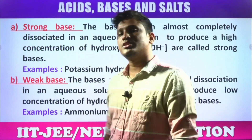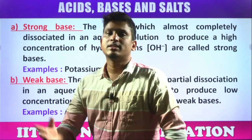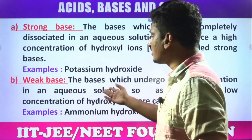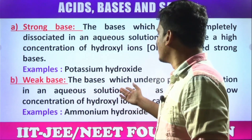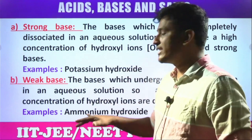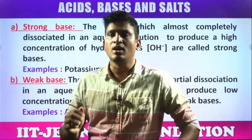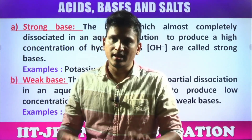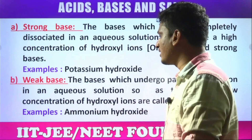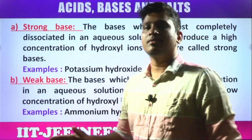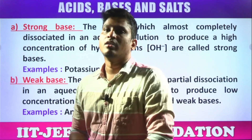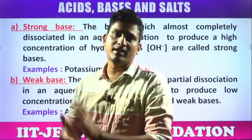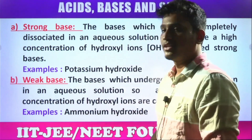Examples of strong bases are potassium hydroxide KOH and sodium hydroxide NaOH. When it comes to weak bases, these are bases which undergo partial dissociation — only a limited number of OH⁻ ions are released. If the extent of ionization is below 30%, it is called a weak base. Examples include ammonium hydroxide NH₄OH, chromium hydroxide, iron hydroxide, and many others.